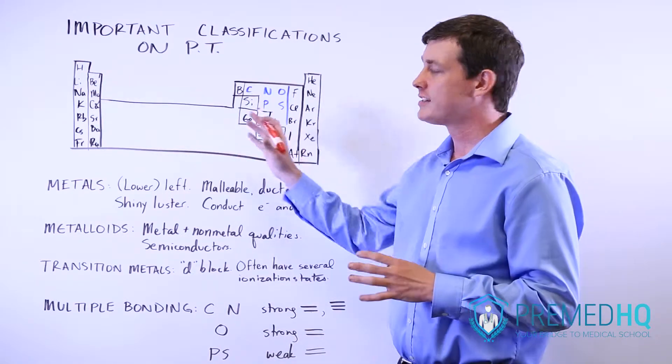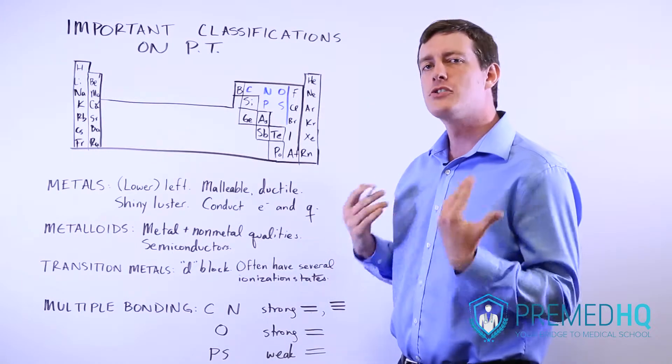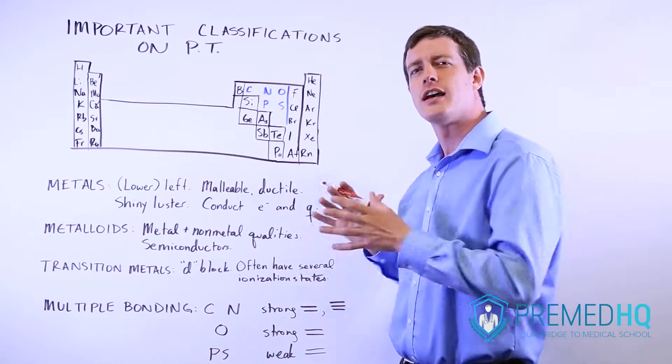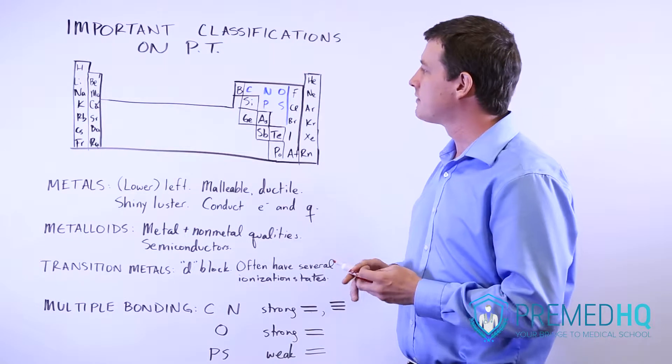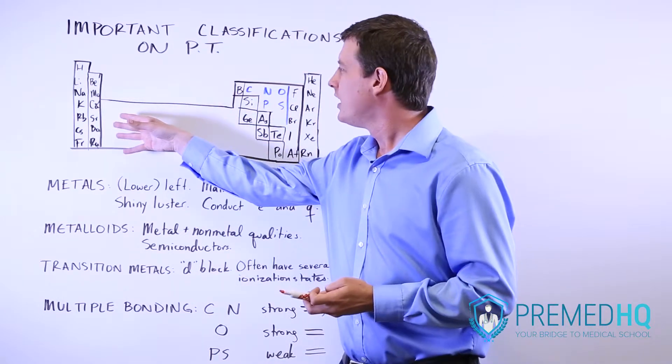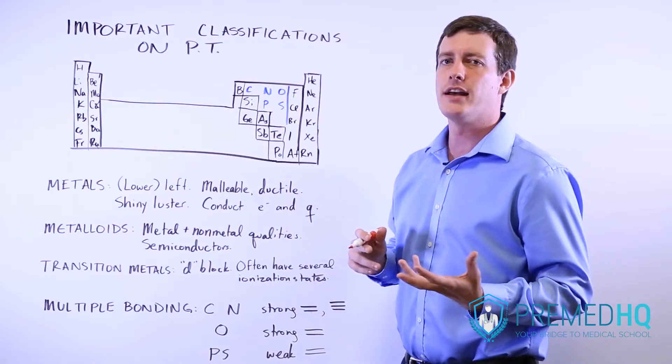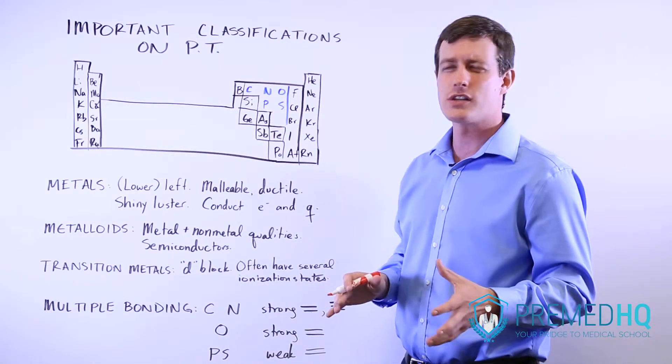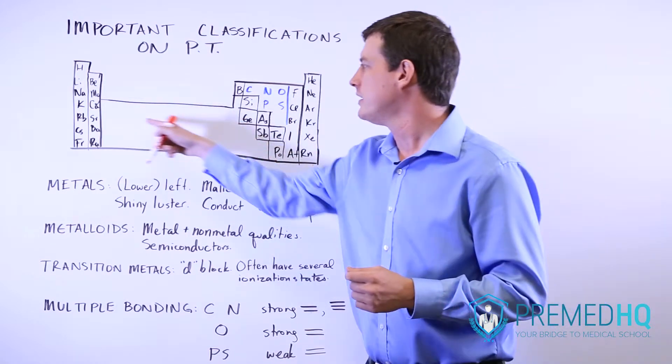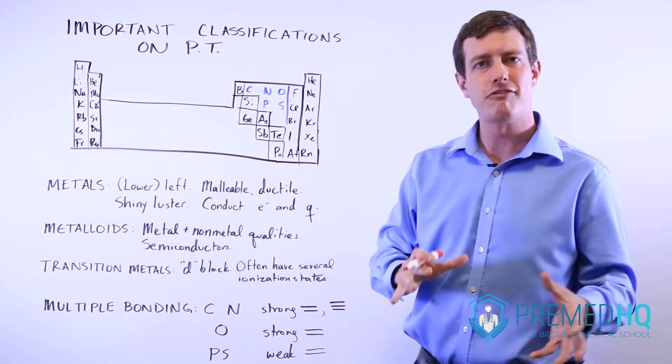Whereas a lot of things tend to ionize only one way, transition metals tend to ionize multiple ways because of the fact that they have this D orbital and also the S and P orbitals available. And so to fulfill Hun's rules of wanting either a completely filled subshell or a half filled shell...